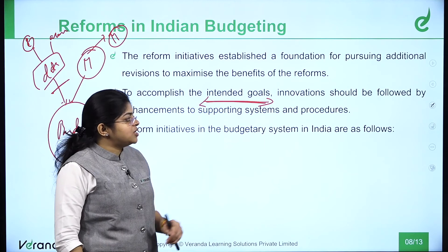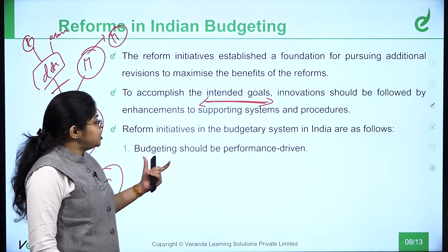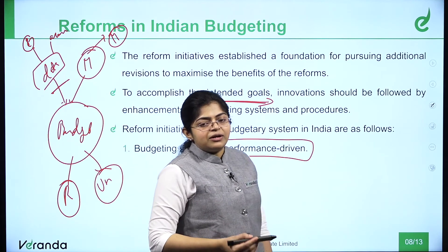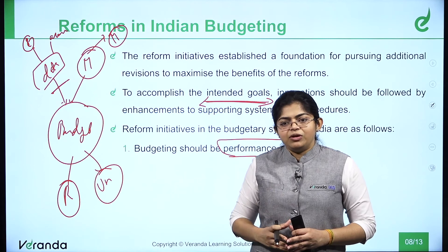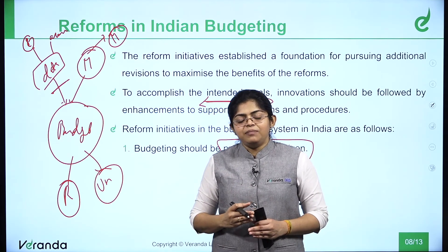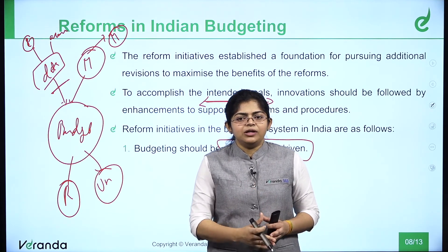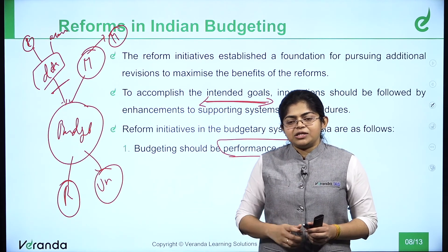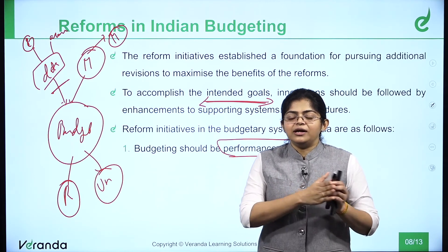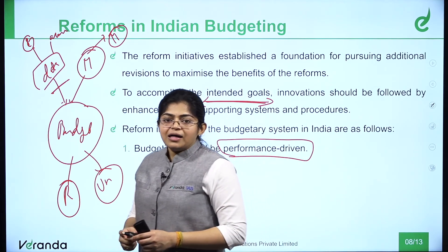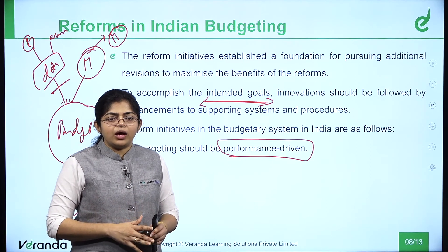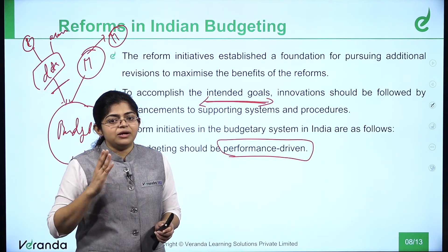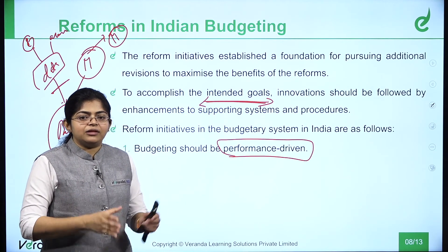The reform initiatives in the Indian budgetary system are as follows. First, budgeting should be performance driven. For example, if starting a new scheme for the MSME sector, the investment should be based on the earlier years' performance of that sector — performance driven rather than demand driven. Even if demand is very high, it is essential to understand how the sector is performing, at what phase funds should be released, and what phase of growth should be targeted. All these should be determined based on the performance of the particular sector in previous years.